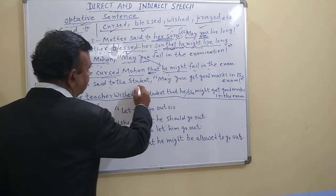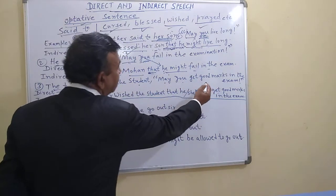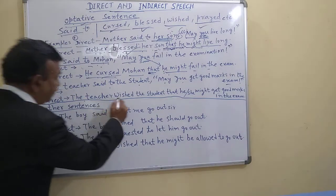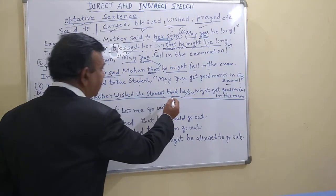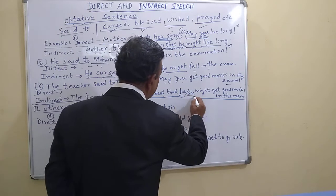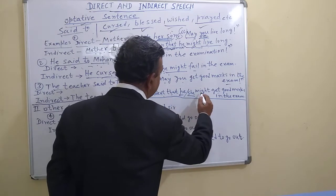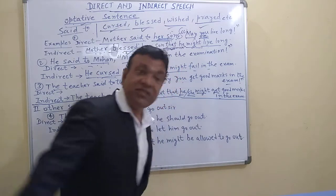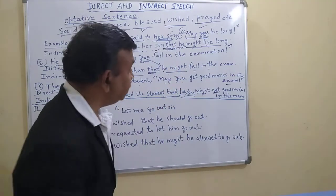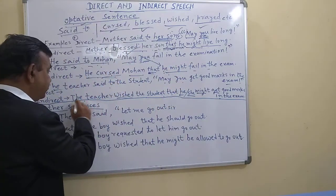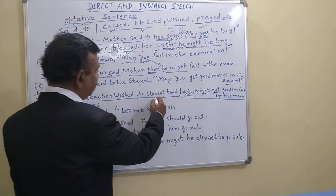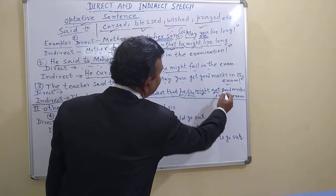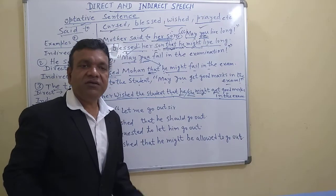Next sentence: 'The teacher said to the student, may you get good marks in the examination.' Here, 'said to' changes to 'wished.' The inverted commas are removed and 'that' is added. Since the student may be a boy or a girl, we use 'he or she.' 'May' changes to 'might.' The indirect form is: 'The teacher wished the student that he or she might get good marks in the examination.'